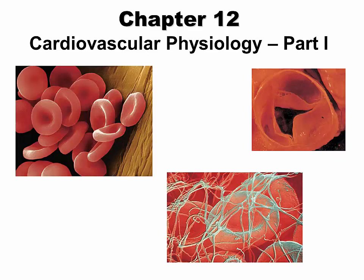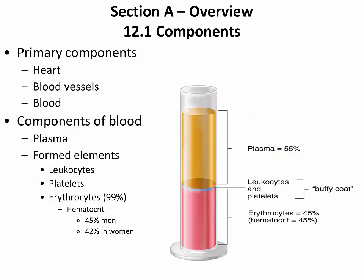Welcome to chapter 12, cardiovascular physiology. We begin with an overview of the components of the circulatory system. The primary components are obviously the heart, blood vessels, and blood.